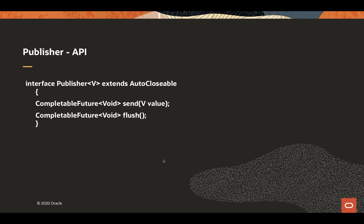The publisher has an asynchronous send that returns a CompletableFuture. If you want to send a value and wait for it to complete, you would call send with a dot join. The flush method is for when there are any number of outstanding asynchronous sends — you call flush dot join and it will wait for all outstanding asynchronous sends to complete, either normally or exceptionally.